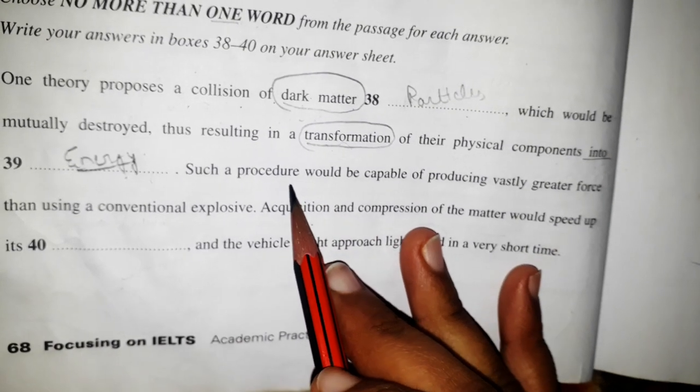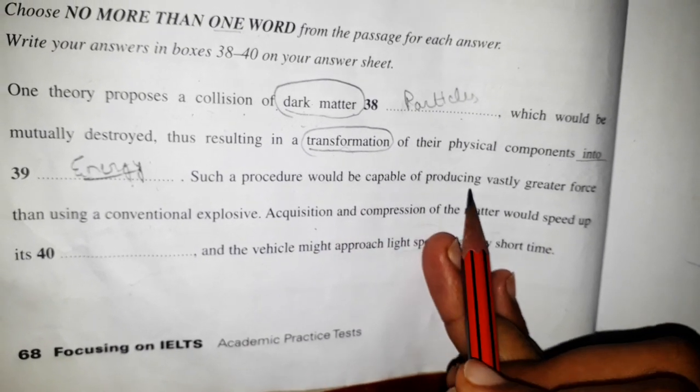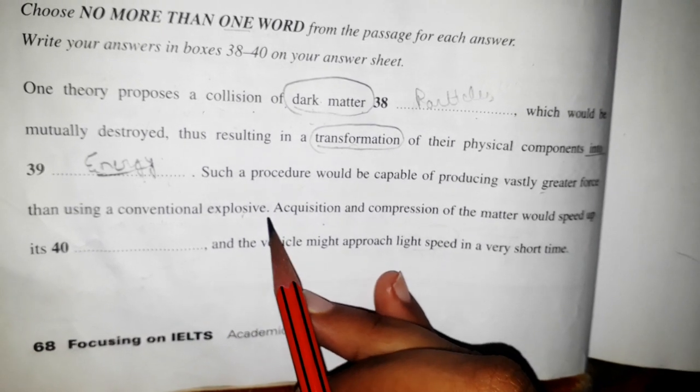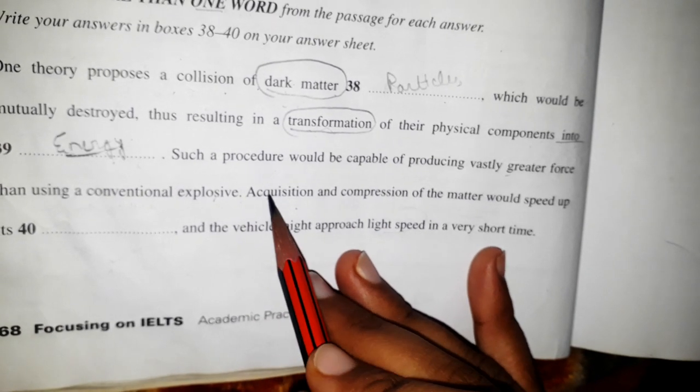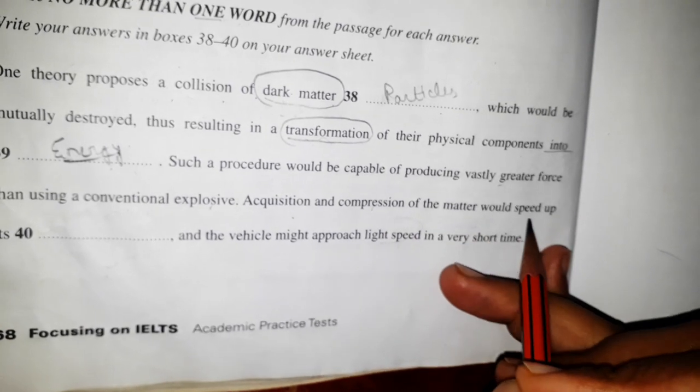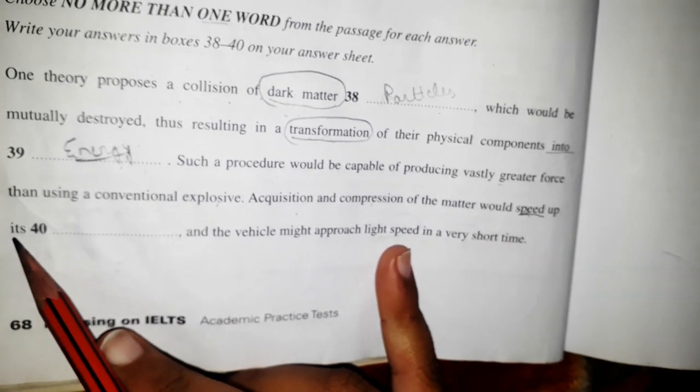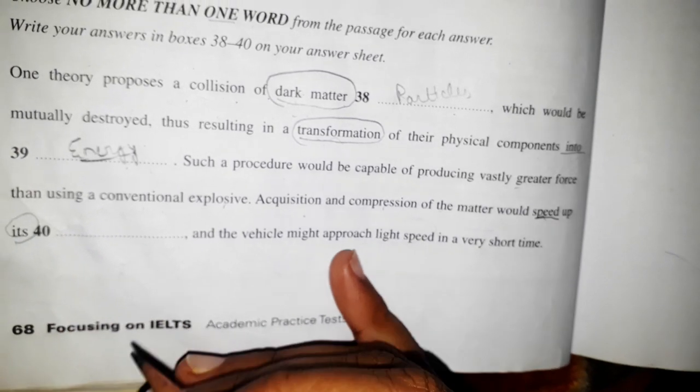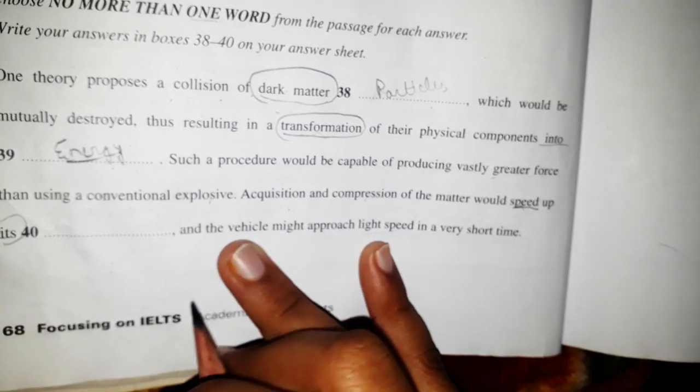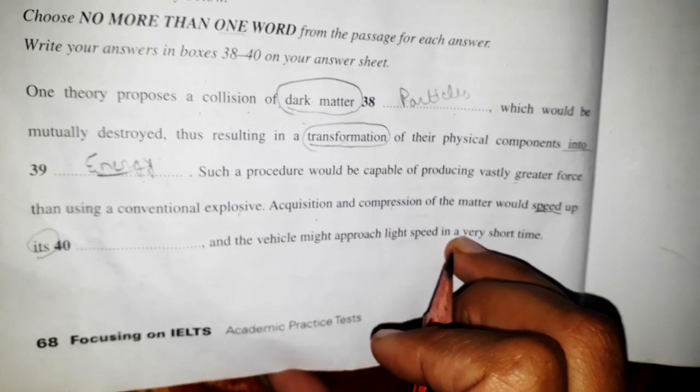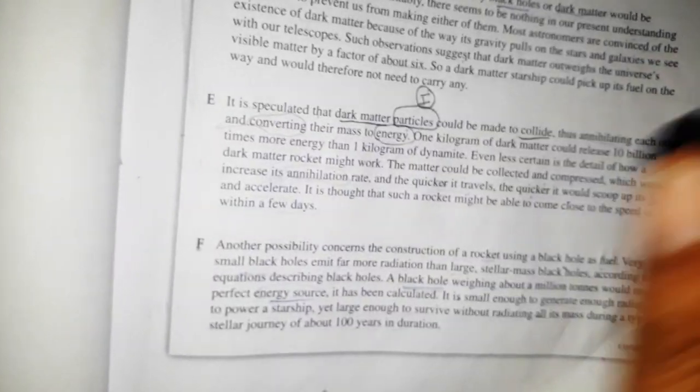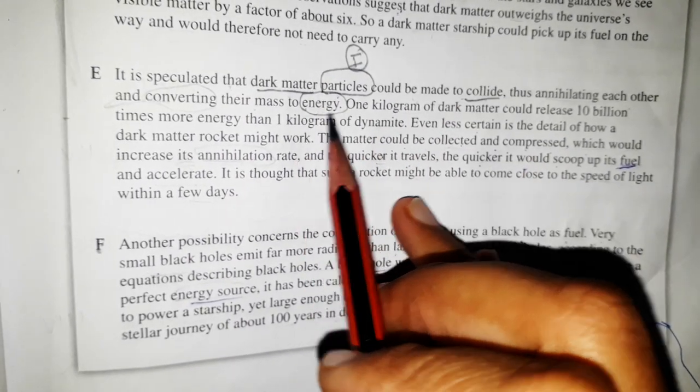Such a process would be capable of producing vastly greater force than using a conventional explosive. This sentence stops here. Next one: acquisition and compression of matter would speed up. We have to see what type of speed up after compression and acquisition, and the vehicle might approach light speed in a very short time. And we move towards the passages.